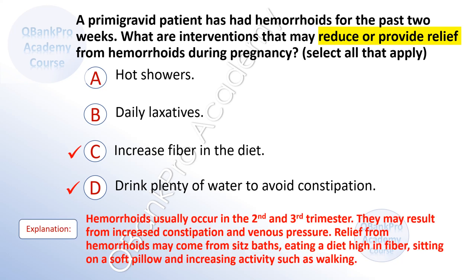The correct answer is C, increase fiber in the diet, and D, drink plenty of water to avoid constipation. Hemorrhoids usually occur in the second and third trimester. They may result from increased constipation and venous pressure. Relief may come from sitz baths, eating a diet high in fiber, sitting on a soft pillow, and increasing activity such as walking.